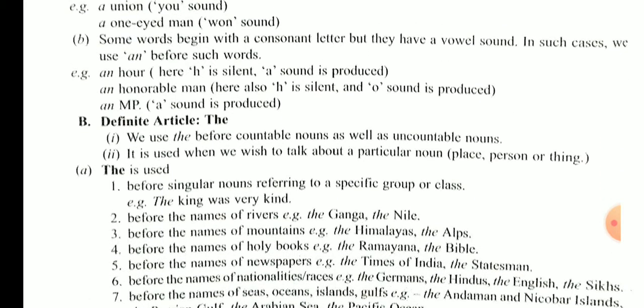We use 'the' before countable noun as well as uncountable noun. 'The' जो है mostly हम use करते हैं जब हम किसी के उपर focus कर रहे हैं, pressure डालके किसी के बारे में जब हम बताते हैं। It is used when we wish to talk about a particular noun - जिसके बारे में बात हो रही है उस noun के साथ हम 'the' use करते हैं। Like place, person or thing।